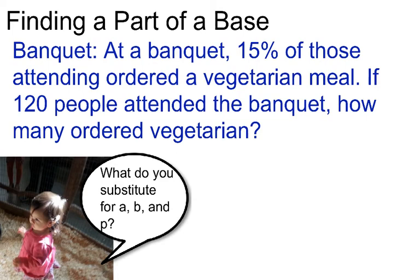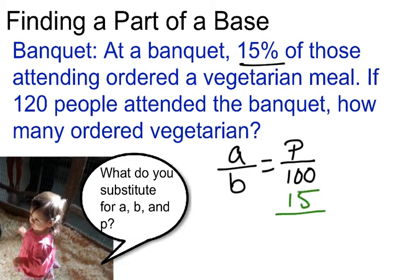Well, to find the number of people who ordered a vegetarian meal, we're going to use a proportion. So I'm going to first write out the proportion, A over B equals P over 100. Now I'm going to look at, do I know the percent? Yes, it's 15. So I know what my P is. So I have my 15 over 100.